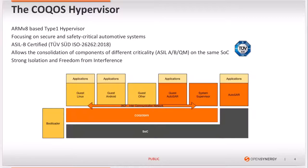The Cocos Hypervisor, or Cocos HV, is a Type 1 hypervisor that makes use of hardware support for virtualization provided by the ARMv8 architecture. Its main focus is secure and safety-critical automotive systems and it is certified as ASIL under the ISO 26262 standard. The main purpose of the Cocos Hypervisor is to allow the consolidation of components of different criticality on the same SoC, meaning you can run guests of different ASIL levels on the same hardware and the hypervisor will provide guarantees for strong isolation and freedom from interference.